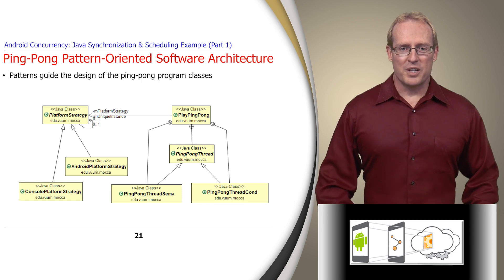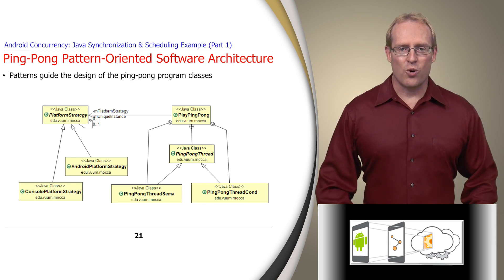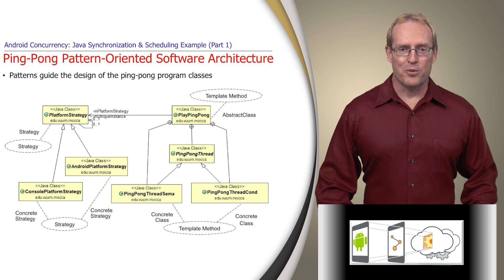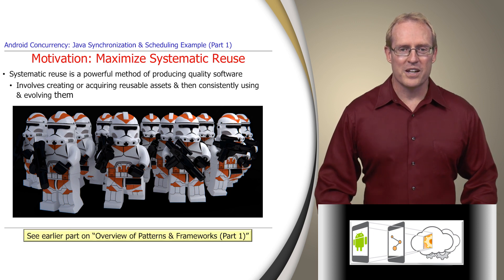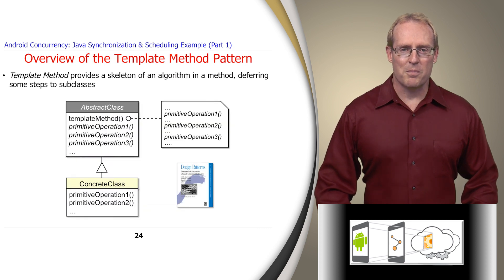Before analyzing the implementation of the object-oriented framework and application code for the concurrent ping pong program in detail, we'll outline its pattern-oriented software architecture, which applies three Gang of Four patterns to guide the design of its classes and enhance certain software quality attributes. For example, we want our solution to maximize systematic software reuse, which involves intentionally creating or acquiring reusable assets and then consistently using and evolving them to obtain a high degree of reuse, thereby optimizing the ability to produce quality software products rapidly and effectively. To achieve this attribute, we use the template method pattern, which provides a skeleton of an algorithm in a method, deferring some steps to subclasses.